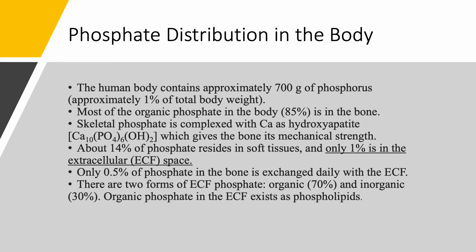14% of phosphorus is in the soft tissues, and only 1% is in the extracellular space. Only 0.5% of the phosphate in the bone is exchanged daily with the extracellular fluids, so not a lot. In the extracellular fluids, we have two kinds of phosphorus — it can be organic or inorganic. 70% is actually organic and exists as phospholipids, while the inorganic portion is 30%.